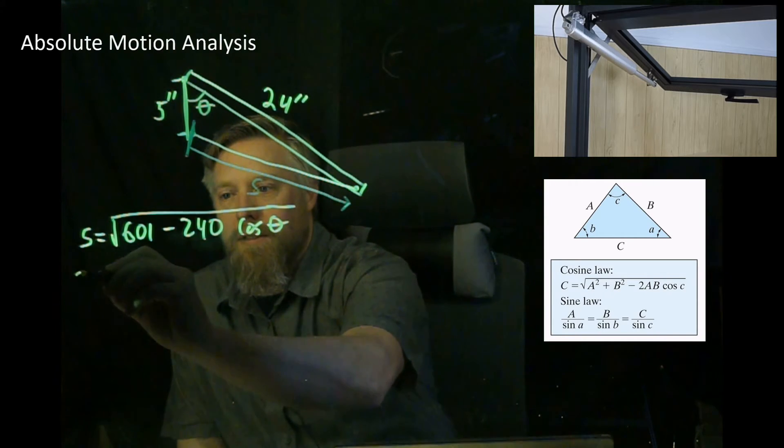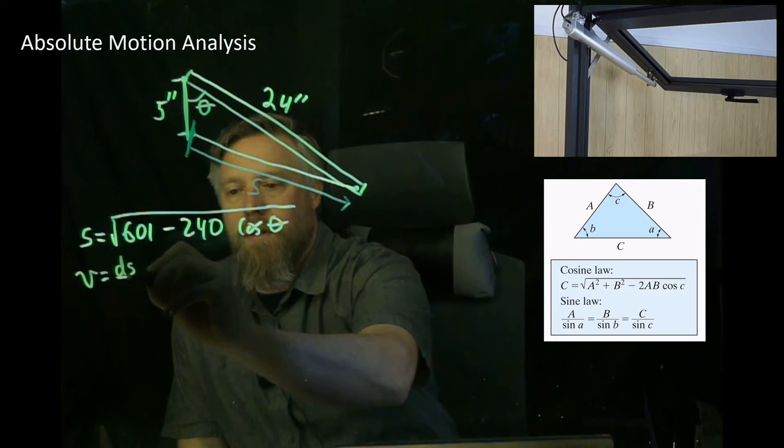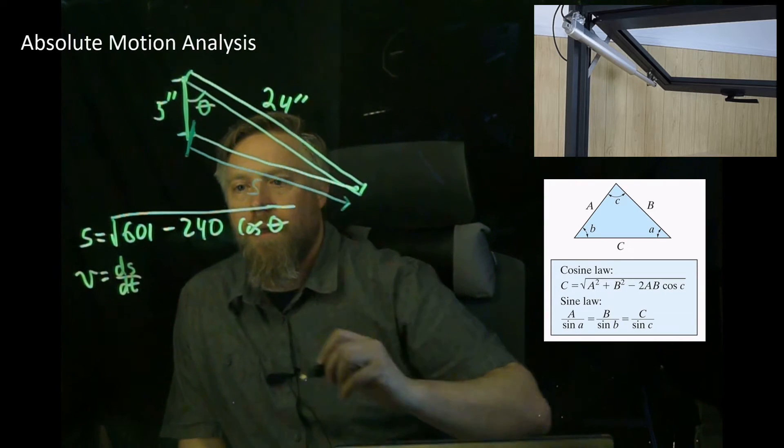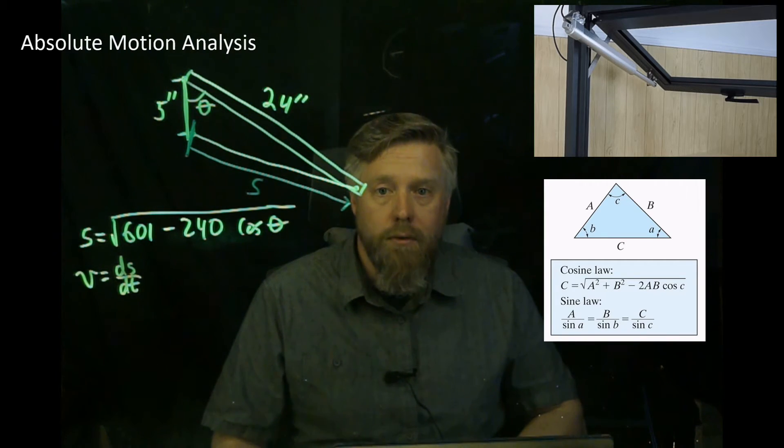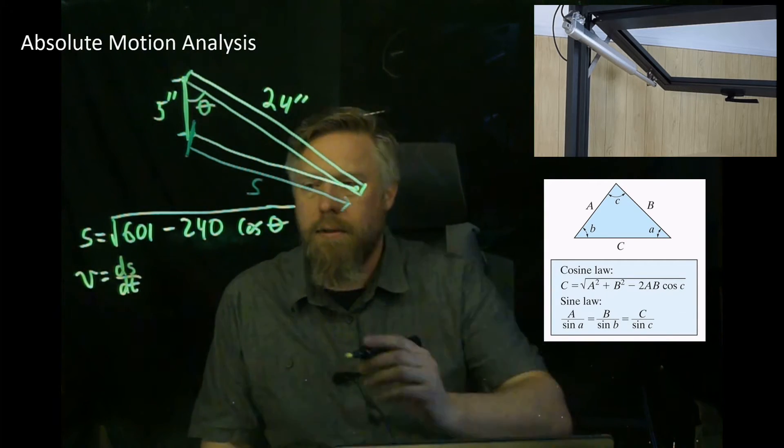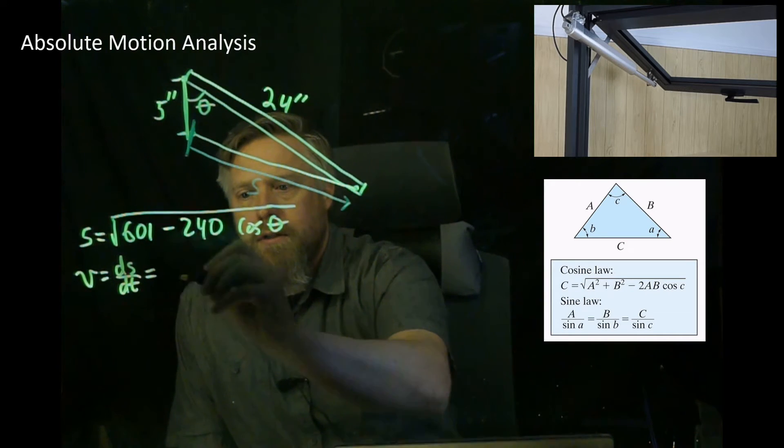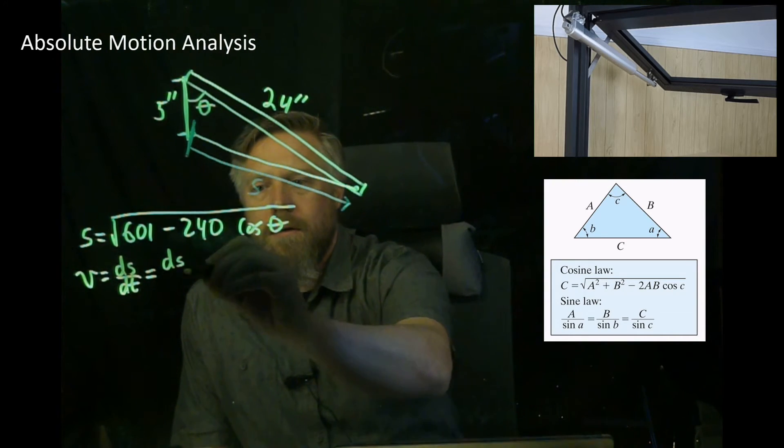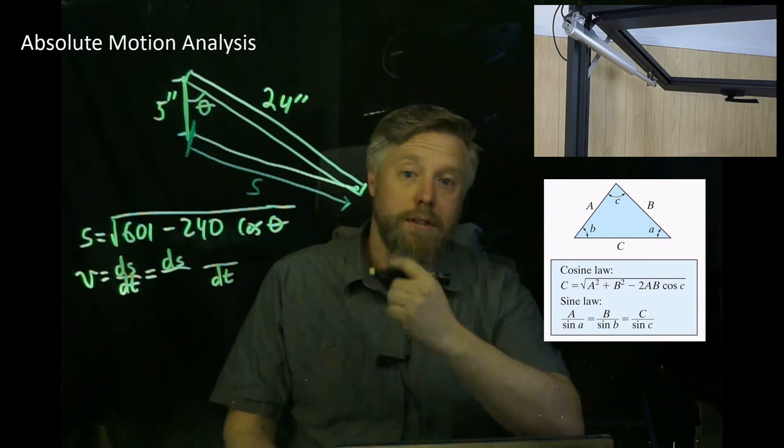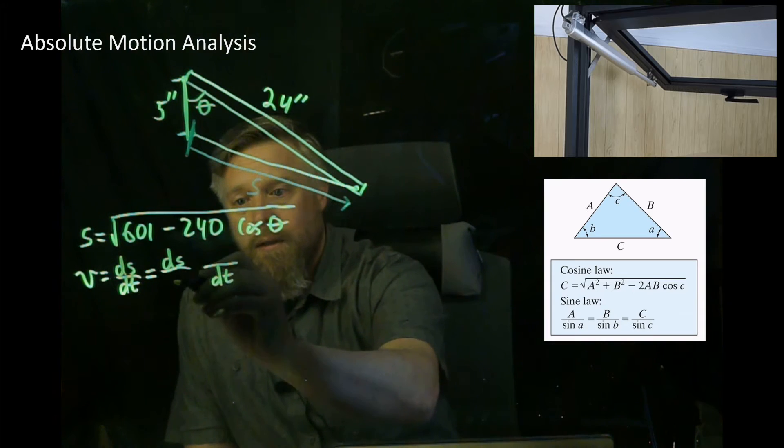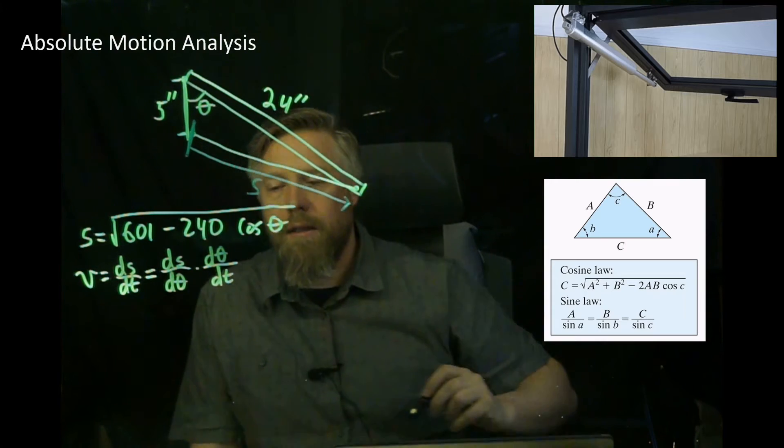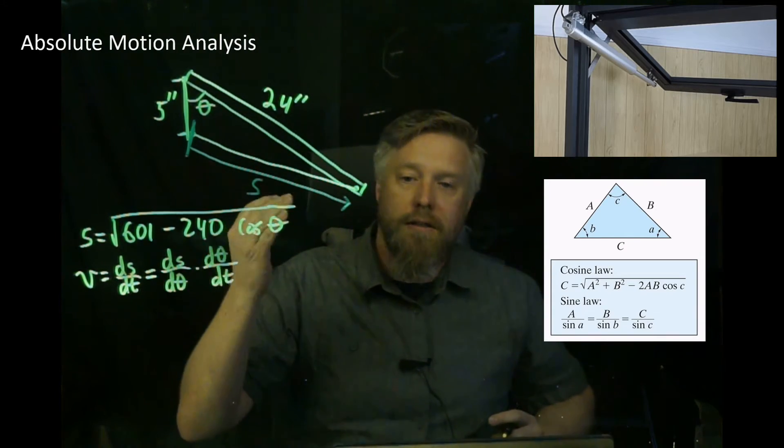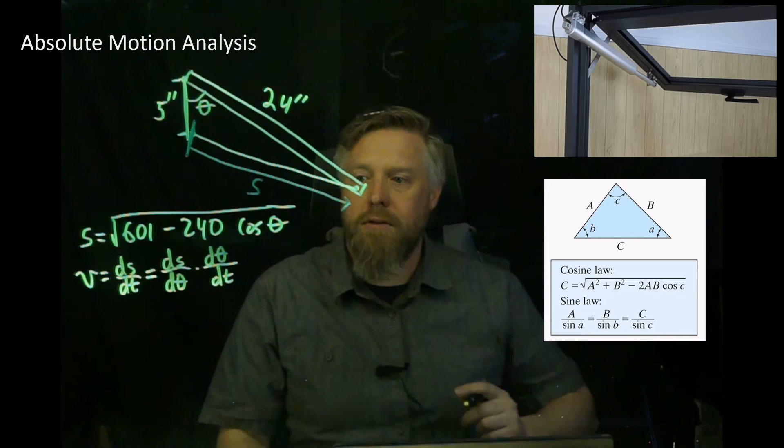This is the same equation: 601 minus 240 cosine theta. Now we're going to take the derivative. We know that velocity is going to equal ds/dt, our base kinematic equation. If you notice, there's no t in our equation, so we're going to have to use the chain rule. Let's write the chain rule right here to remind ourselves. The way I like to do the chain rule is: I know I have ds/dt, so I'm going to do ds here and dt over here. Then I have to fill in the middle based on what's in my equation—in this case it's theta. d theta and d theta. Those two multiplied together give me ds/dt.